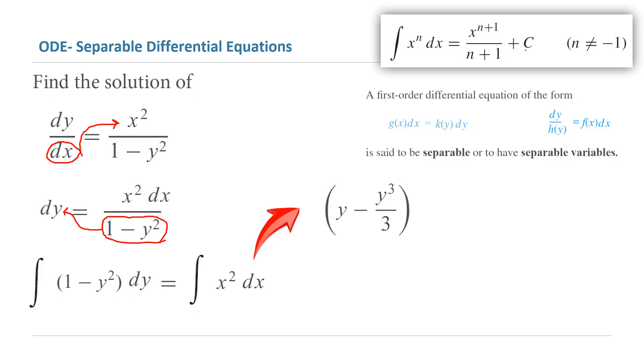We end up with y minus y cubed divided by 3. And on the other side, we have x cubed over 3 plus constant of integration.